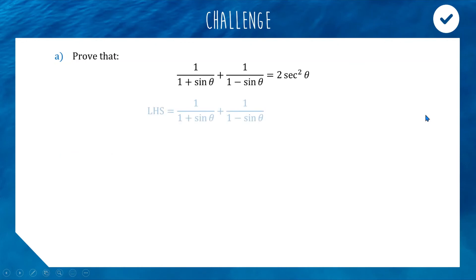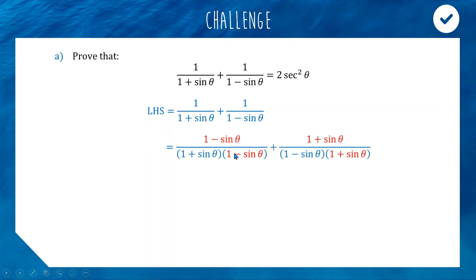Starting from the left-hand side: we want to go from two terms to one, so we combine the fractions. To add fractions we need a common denominator. Multiply the first fraction top and bottom by (1 − sinθ), and the second fraction top and bottom by (1 + sinθ). Now both fractions share the same denominator.